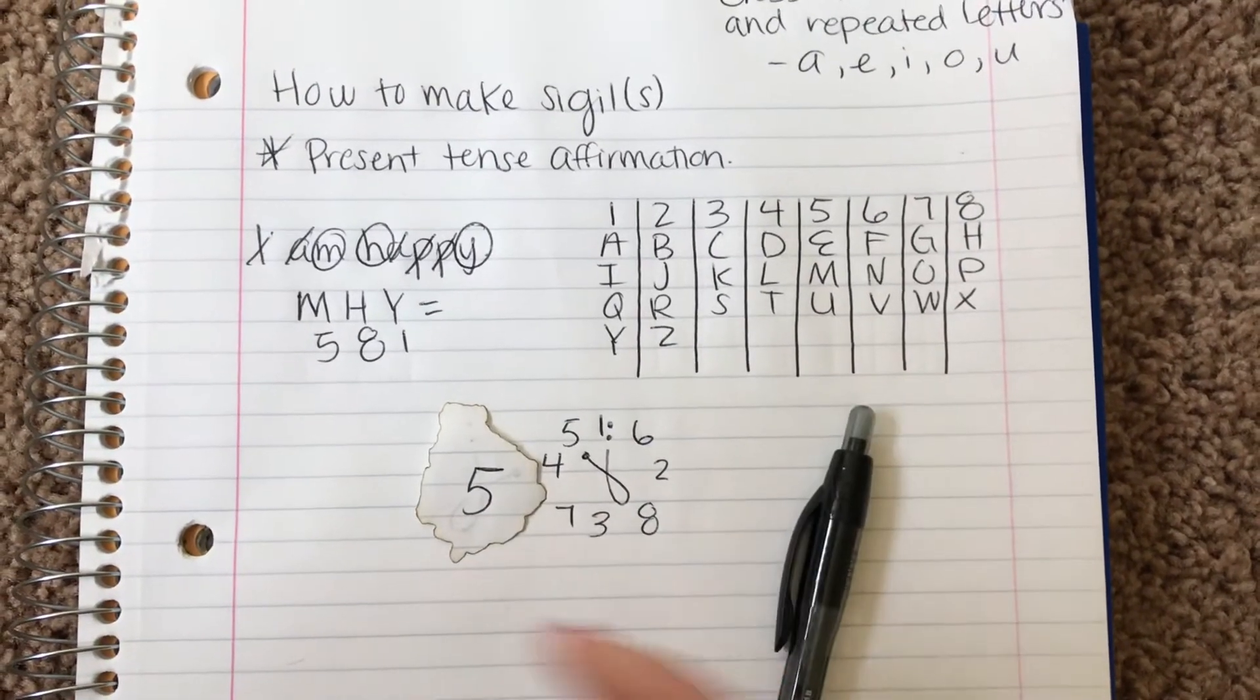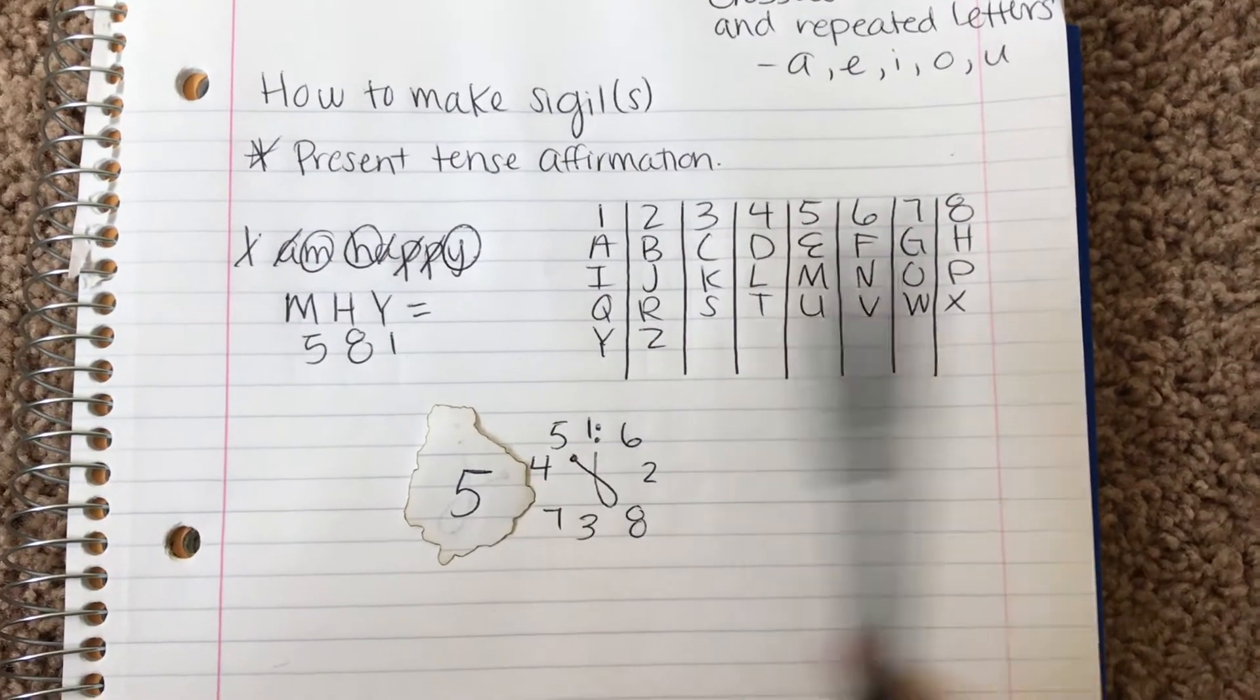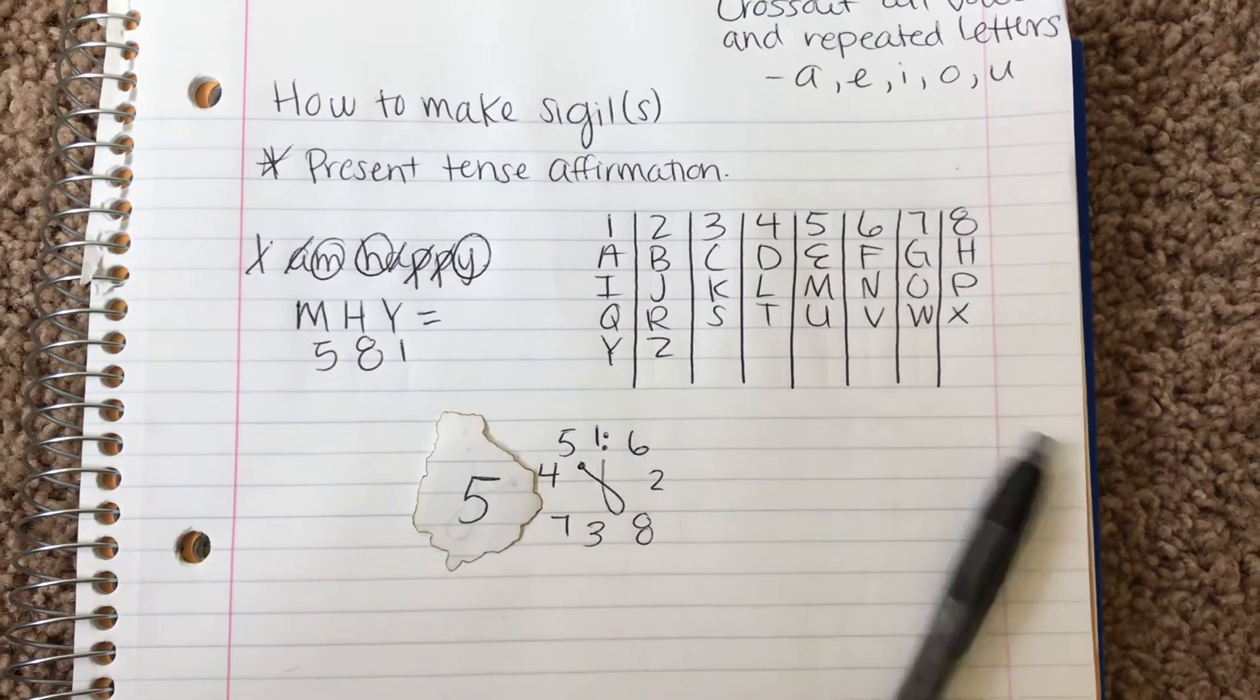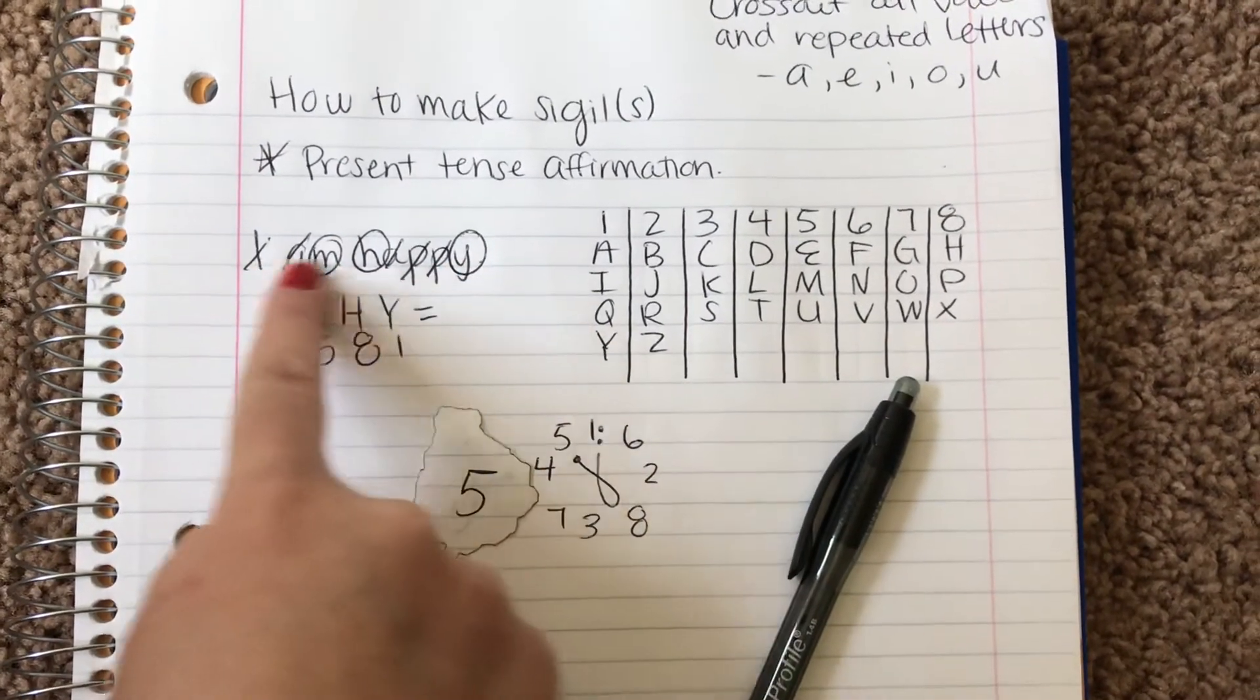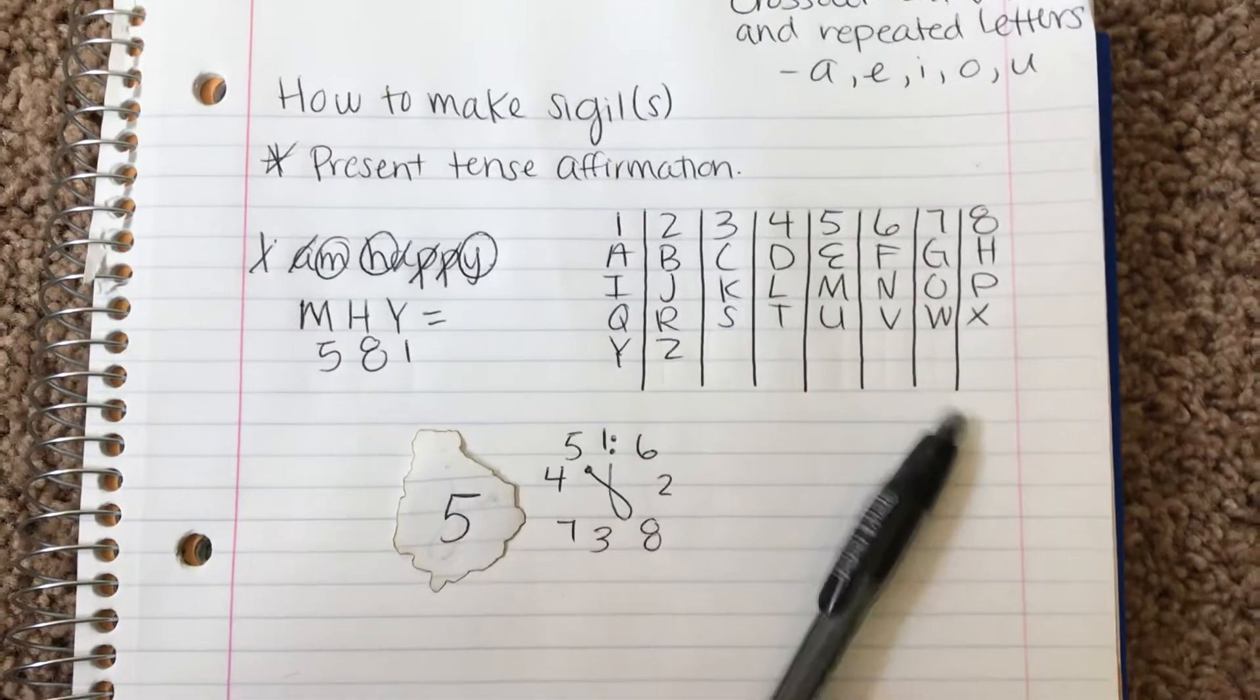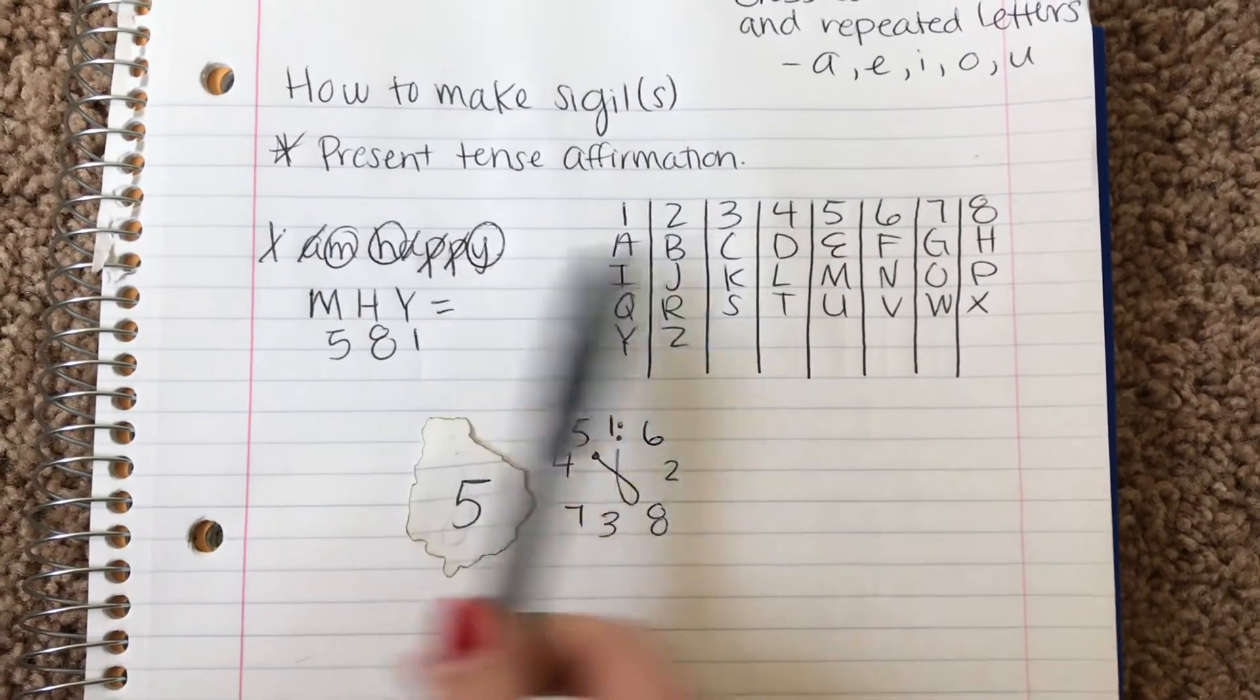So basically it's a vibration of 5. The reason I do this is because the number that it equals down to, I feel like it's very powerful with this. So 5 for me is about change and all that. So I see it as a good number anyway.